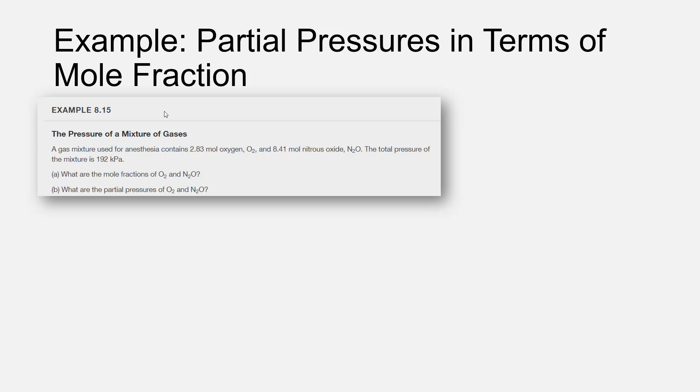The setup for this problem is a gas mixture used for anesthesia contains 2.83 moles of oxygen O2 and 8.41 moles of nitrous oxide N2O. The total pressure of the mixture is 192 kilopascals.